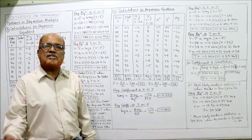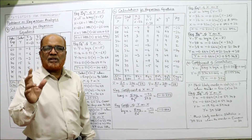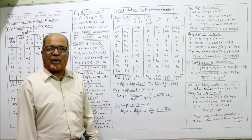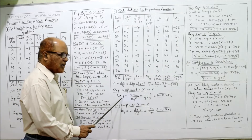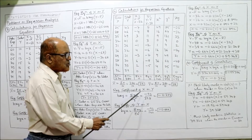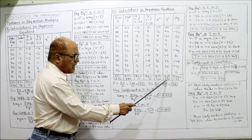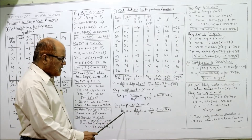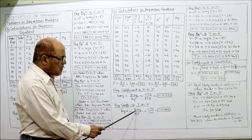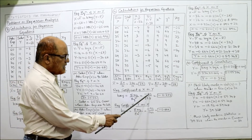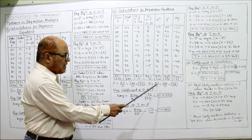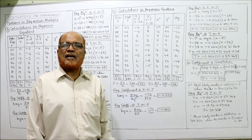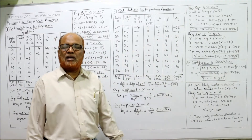All calculations are complete. Now calculate regression coefficients. BXY (X on Y) equals summation XY divided by summation Y squared: minus 93 divided by 398 equals minus 0.234. BYX (Y on X) equals summation XY divided by summation X squared: minus 93 divided by 140 equals minus 0.664. Now substitute these to find the regression equations.